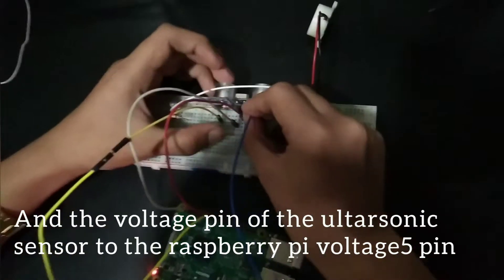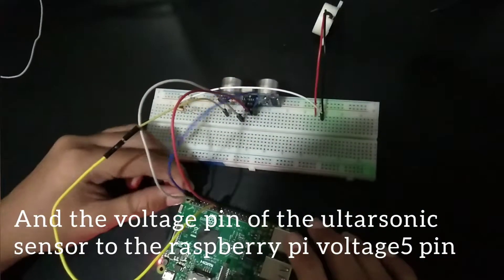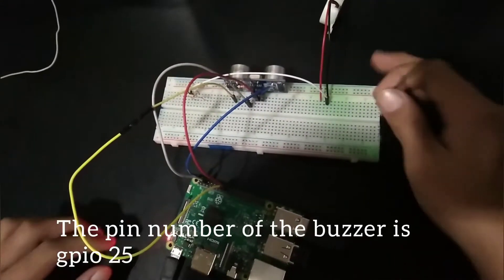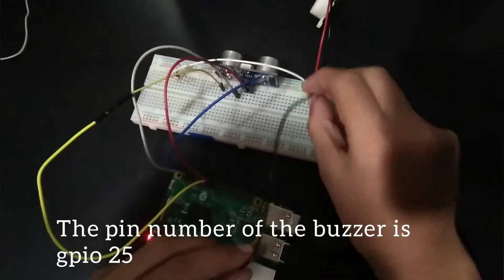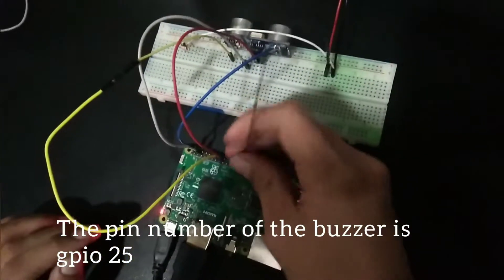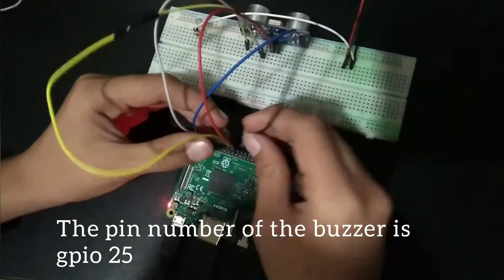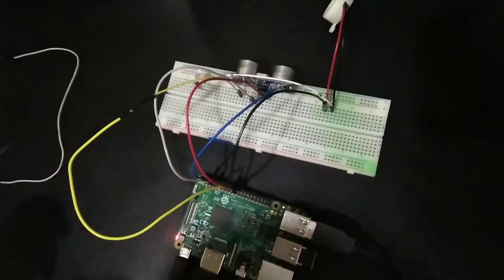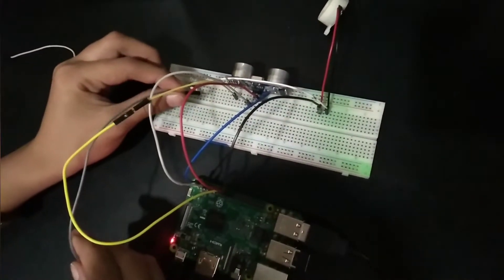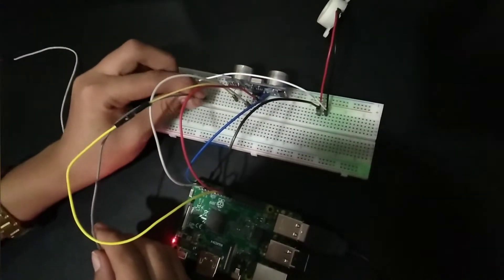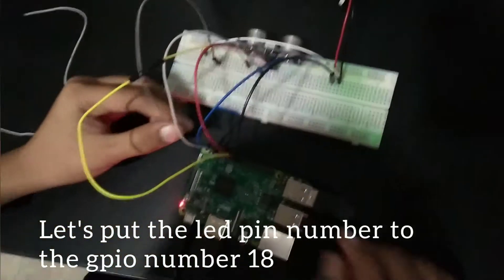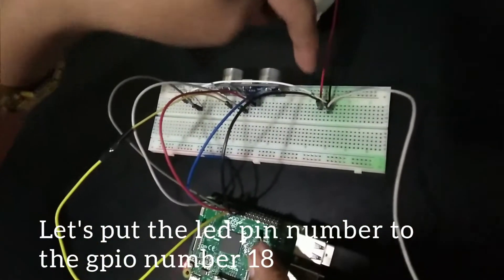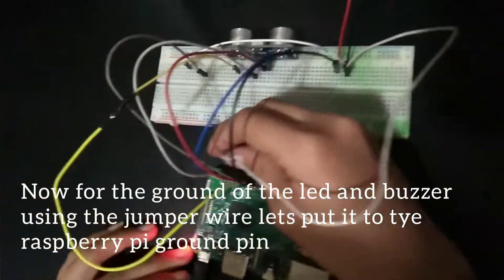The voltage and LED connect to pin number 18. The negative side of the buzzer connects to ground on the Raspberry Pi.